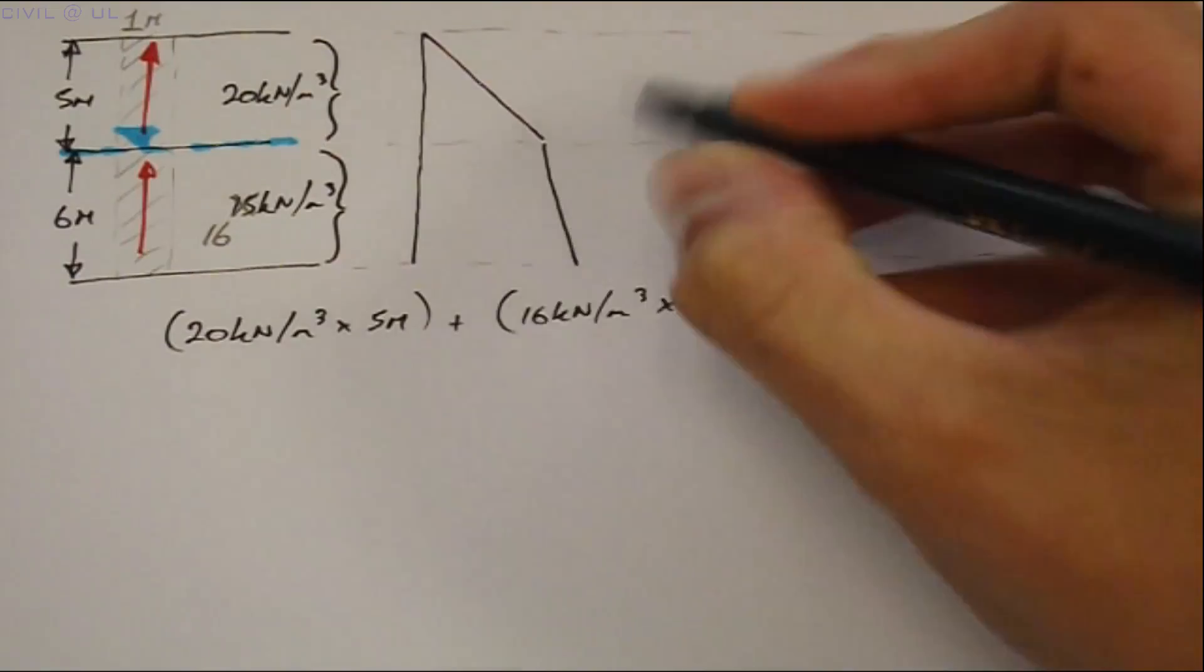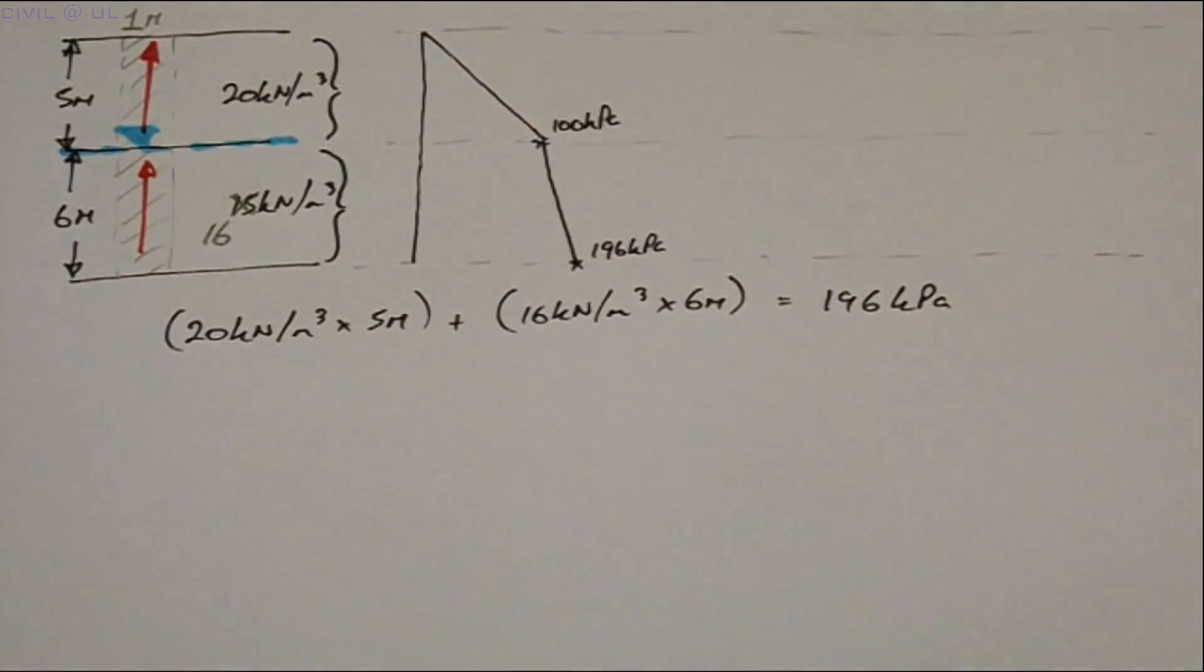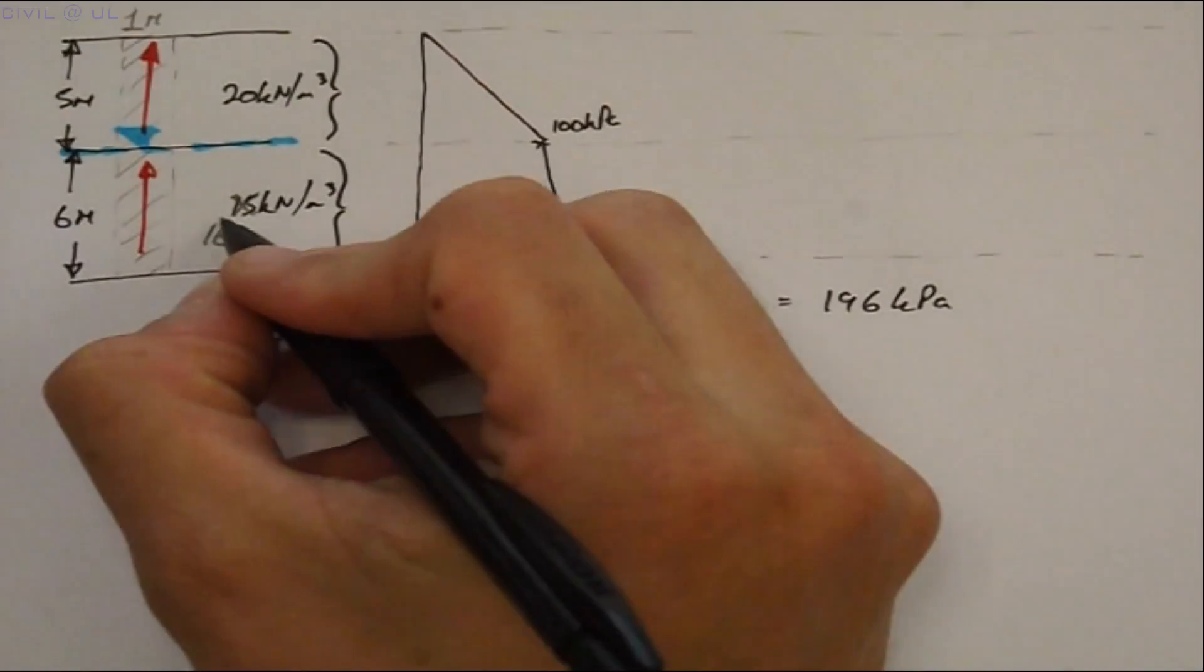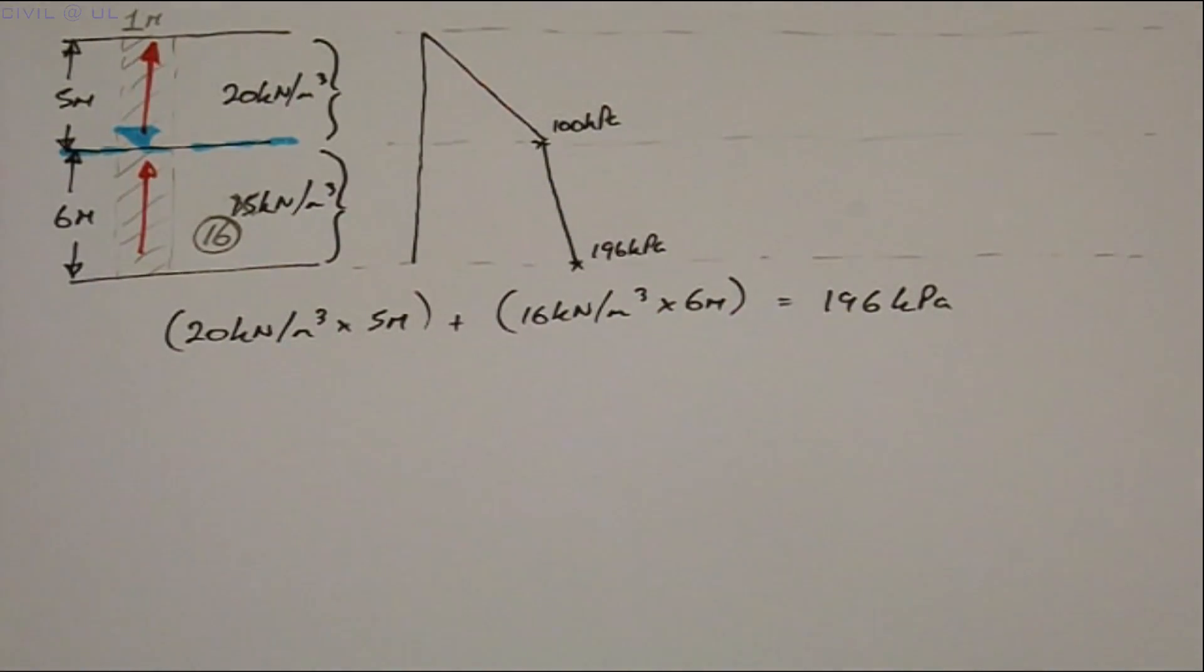This can be represented graphically as follows. Now we must deal with the water. We've already taken its weight into account via the increase in unit weight of strata two. But the water has a second influence.